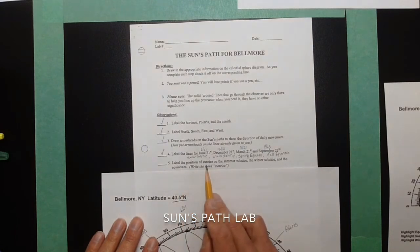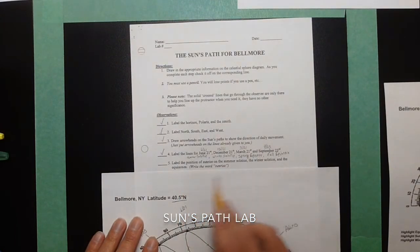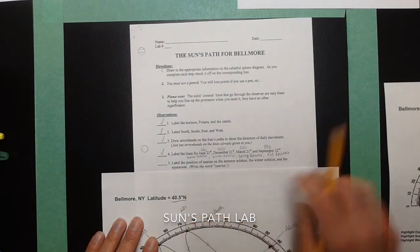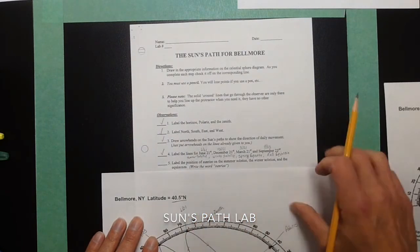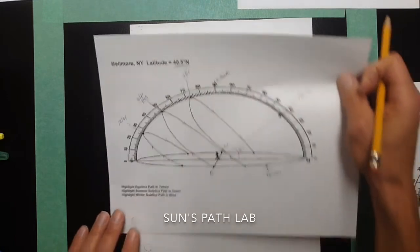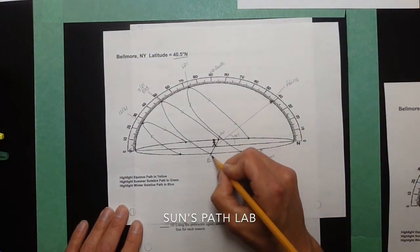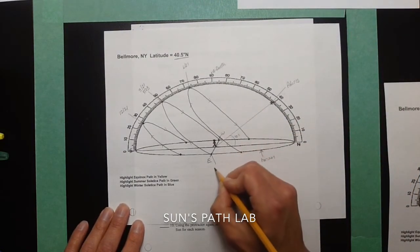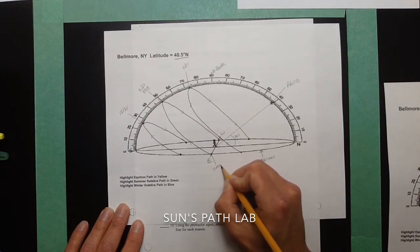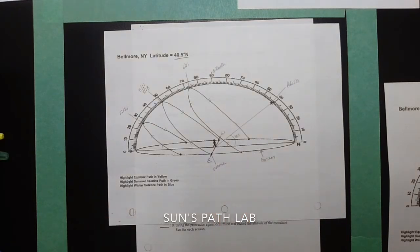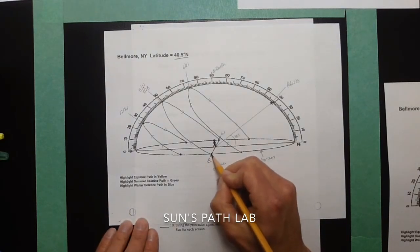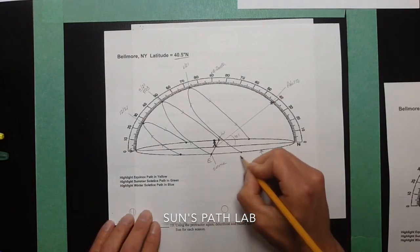Now, label the positions of sunrise on the summer solstice, the winter solstice, and the equinoxes. So, sunrise is somewhere towards the east. On the equinox, sunrise is always due east. So this point represents sunrise on the equinox.